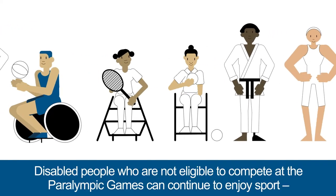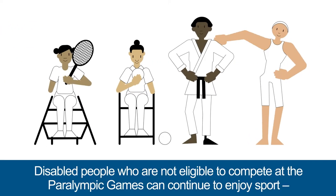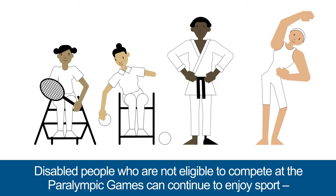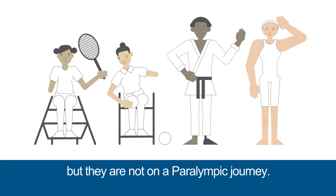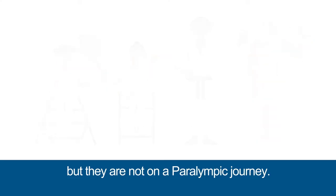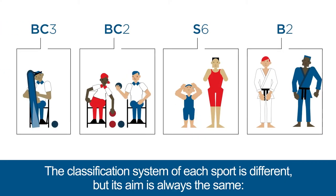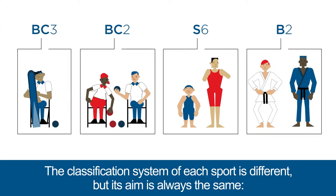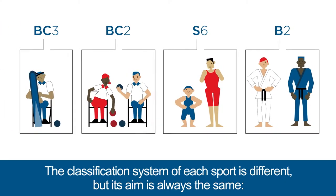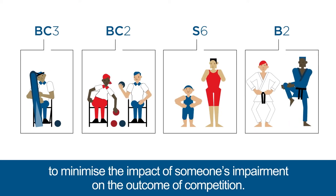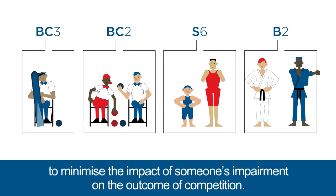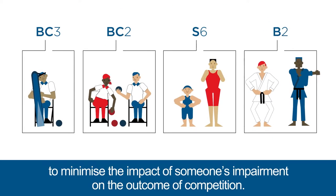Disabled people who are not eligible to compete at the Paralympic Games can continue to enjoy sport, but they are not on a Paralympic journey. The classification system of each sport is different, but its aim is always the same: to minimise the impact of someone's impairment on the outcome of competition.